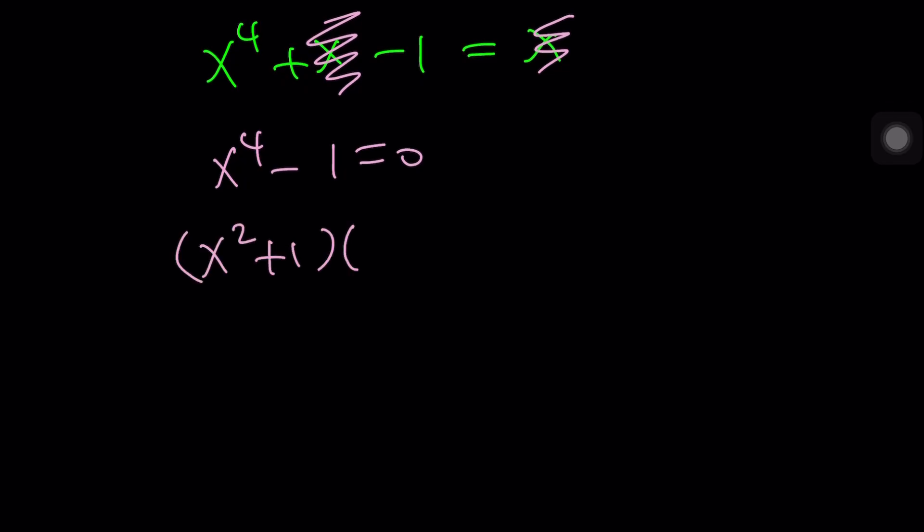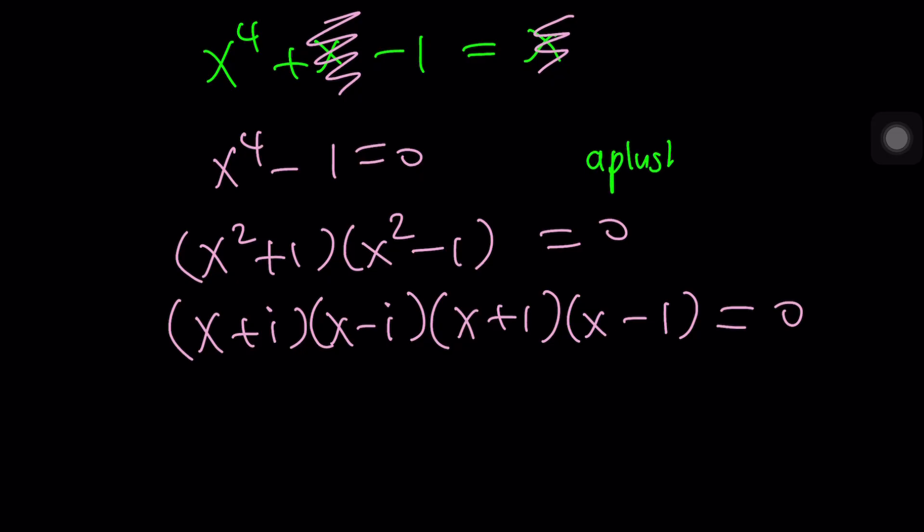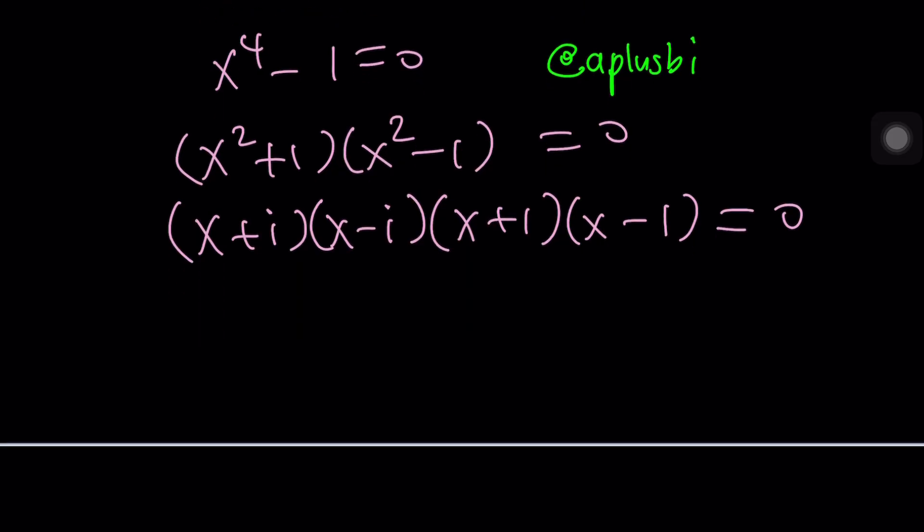You can write it as x squared plus one times x squared minus one, and then as x plus i, x minus i, x plus one, x minus one. Who said sum of two squares cannot be factored? Of course it can be factored in the complex world. This channel is not about complex numbers, but we can still talk about it. From here we get four solutions: x equals negative i, x equals i, x equals negative one, x equals one. Do they all satisfy the original equation? I'm too lazy to check. Please do the check for me.